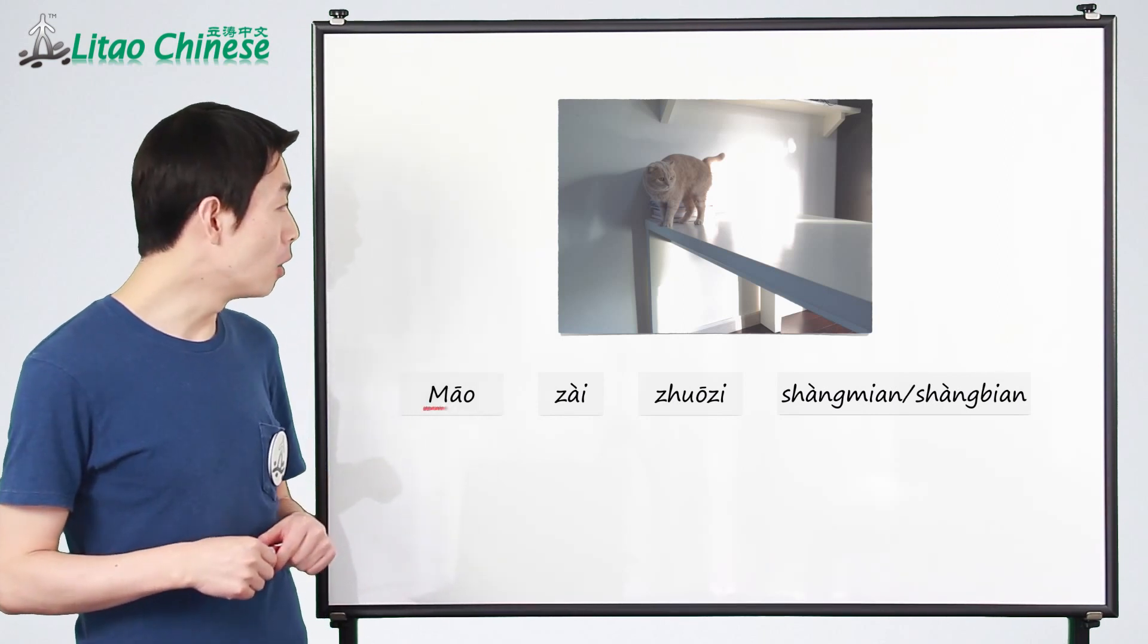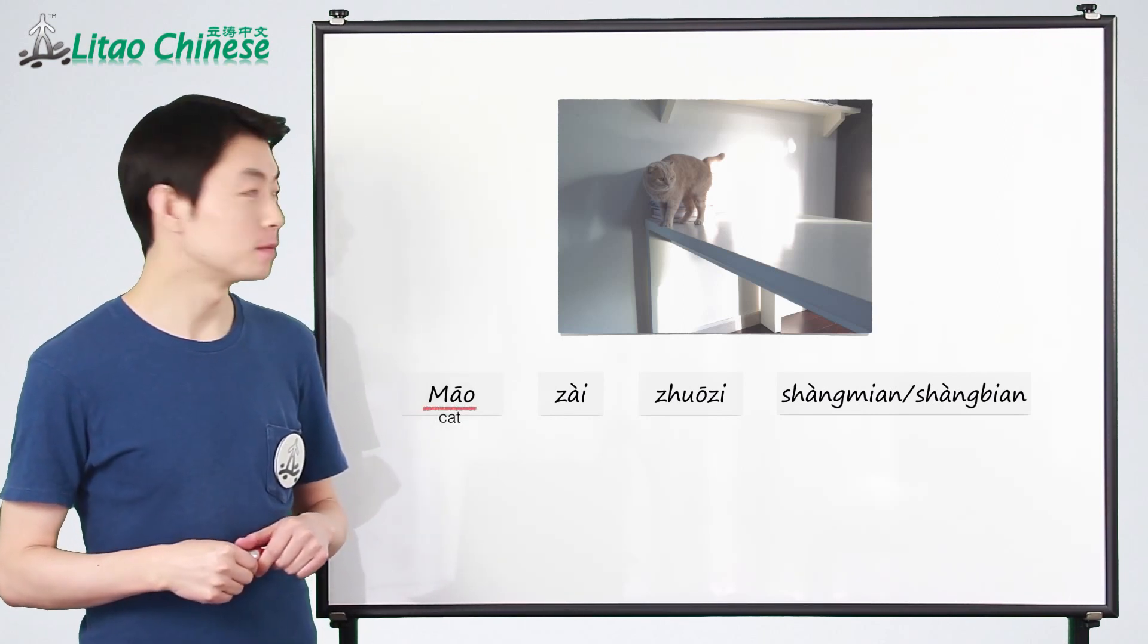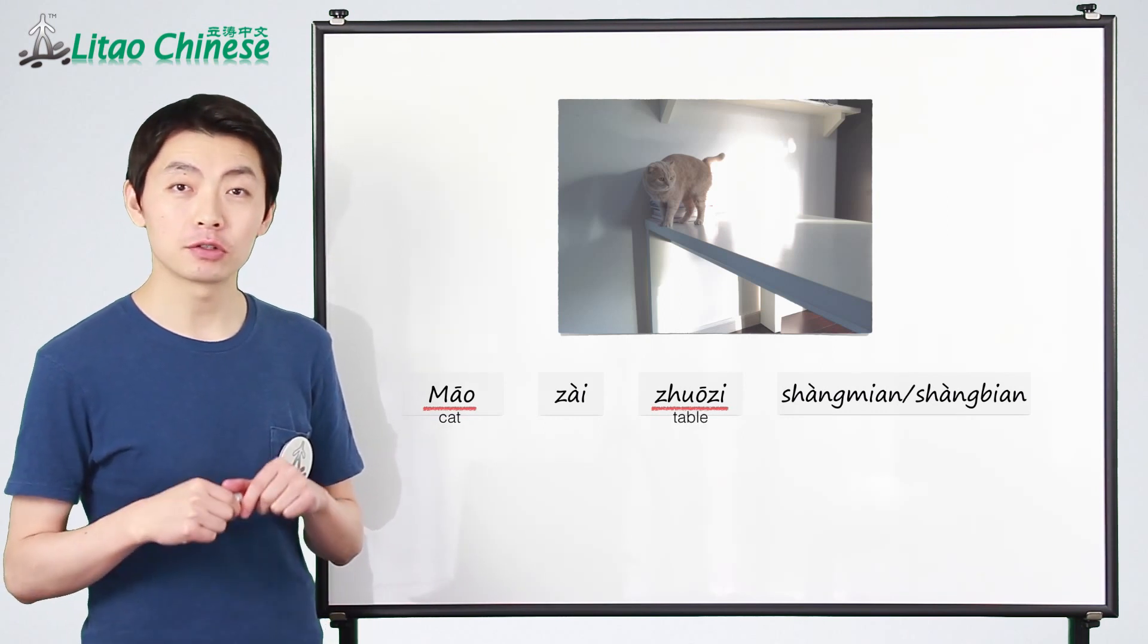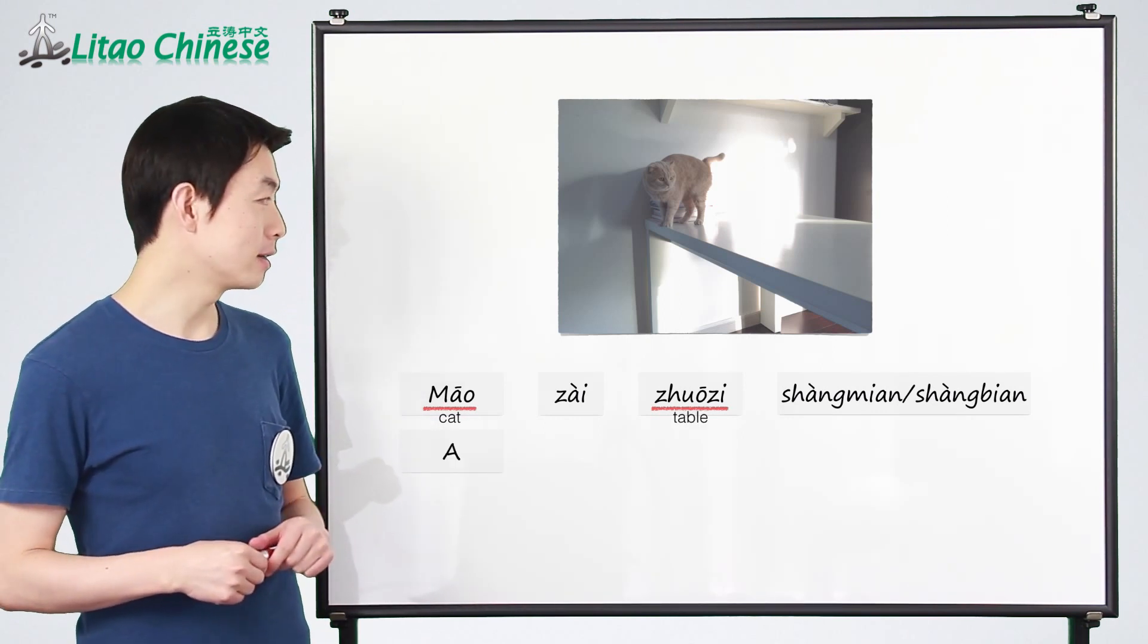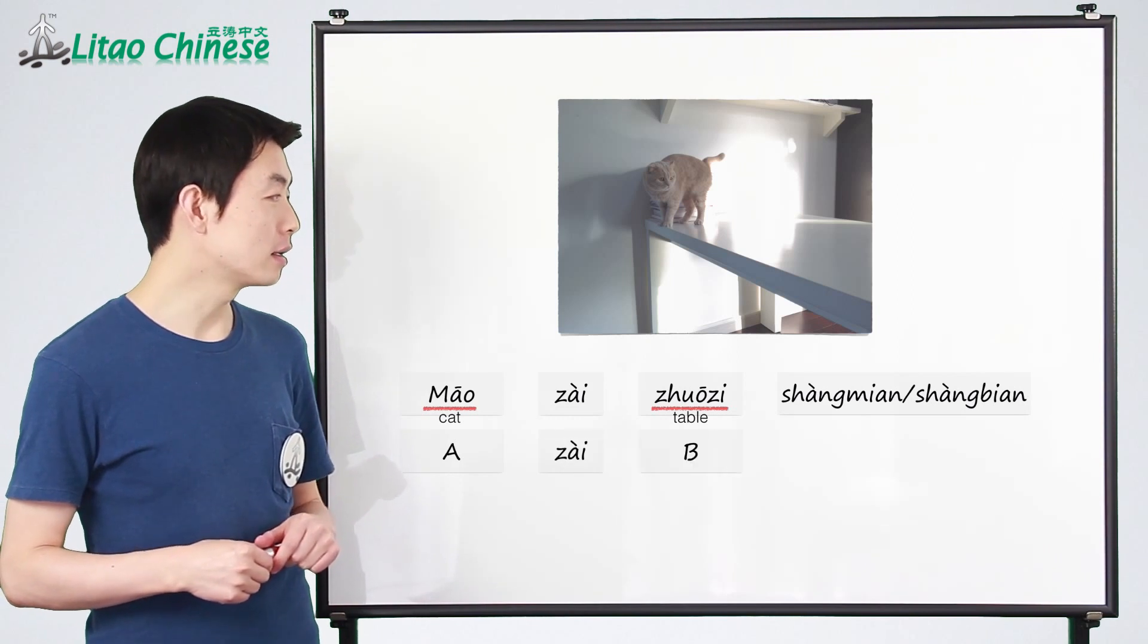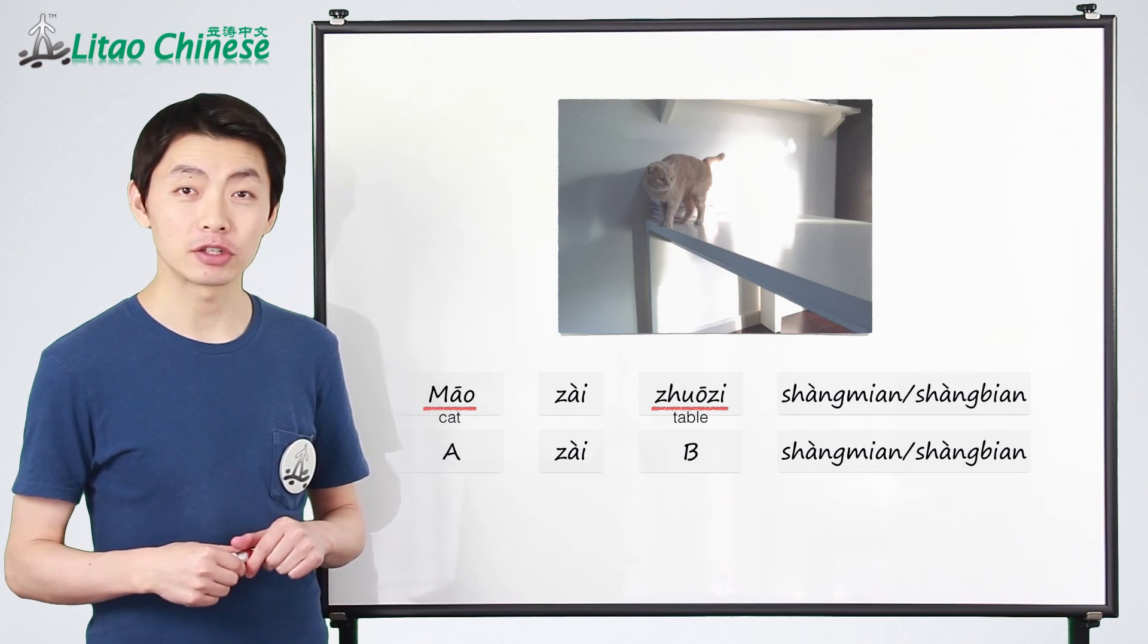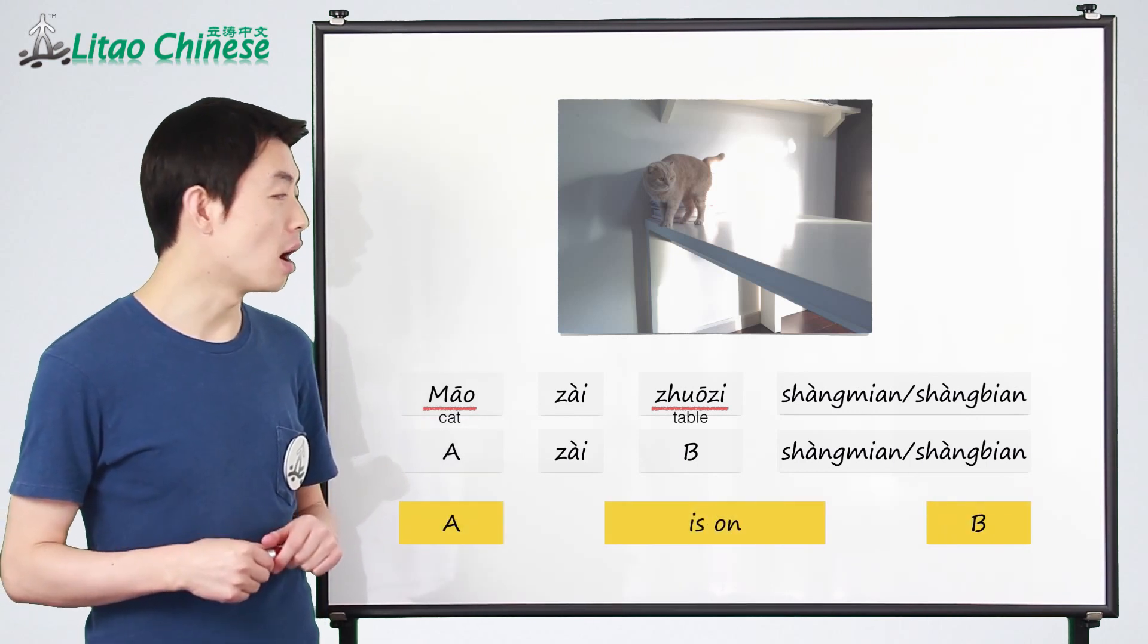猫在桌子上面. 猫 means cat, 桌子 means table, so the structure A zai bi shang mian or 上边 means A is on B.